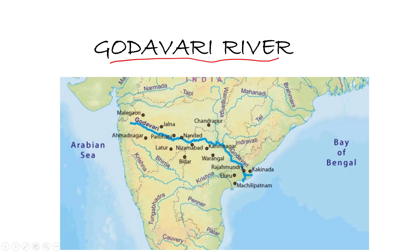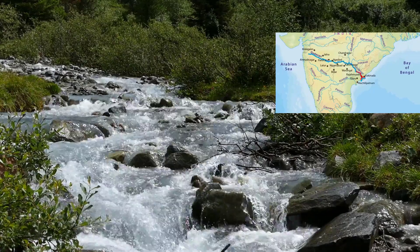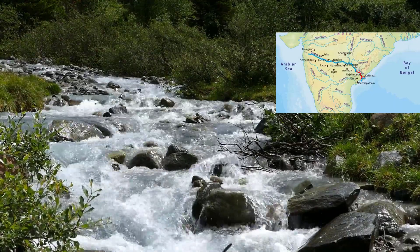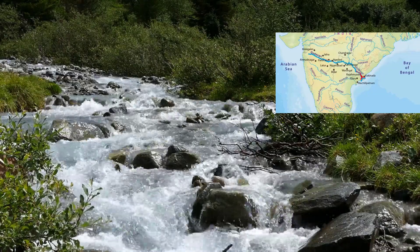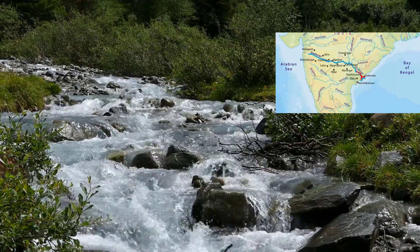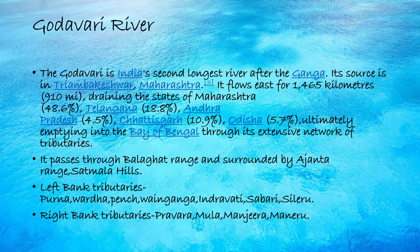River Godavari is one of the longest rivers in India, with a total length of 1,465 kilometres and a drainage basin of 3,13,000 square kilometres. It's called Vriddha Ganga — the Ganga of the South — and is the largest river in South India. It originates near the Brahmagiri range in the Western Ghats, flows northerly, bends easterly through the Deccan Plateau, then south-easterly through the Papi Hills, and drains into the Bay of Bengal, forming a delta called Konasima.